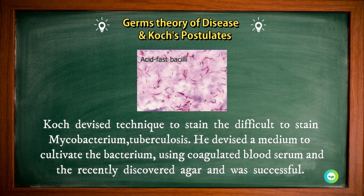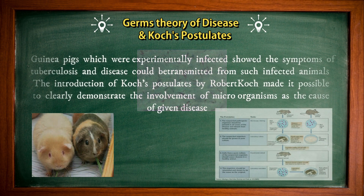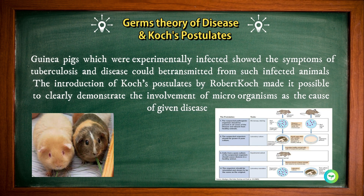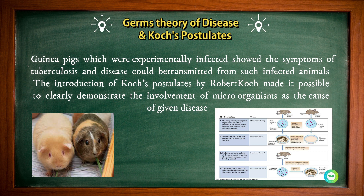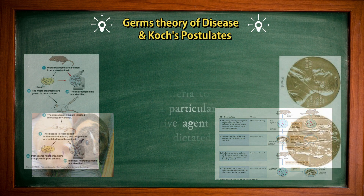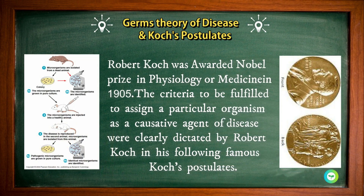Koch devised techniques to stain the difficult-to-stain Mycobacterium tuberculosis. He developed a medium to cultivate the bacteria using coagulated blood serum and the recently discovered agar, and was successful. Guinea pigs experimentally infected showed the symptoms of tuberculosis, and the disease could be transmitted from such infected animals. Robert Koch was awarded the Nobel Prize in Physiology or Medicine in 1905.